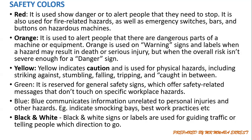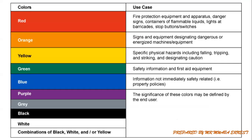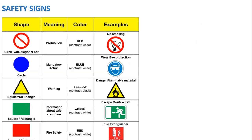Black, white, and gray can be used at the user's discretion — as a workplace, you may decide how to employ these colors. One example is that black and white signs are used for labeling or guiding traffic and telling people which direction to go. To summarize the color coding: red for danger, orange next to red, yellow for specific physical hazards, green for general safety information, blue for non-safety policy-related information, and black, white, and gray at user discretion.